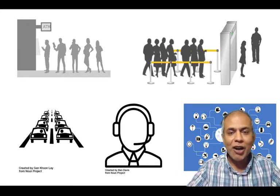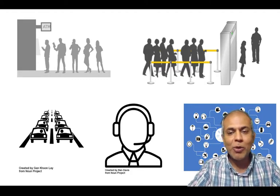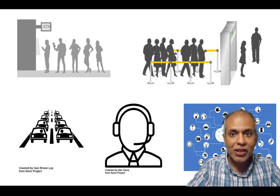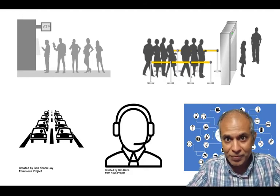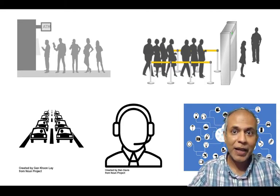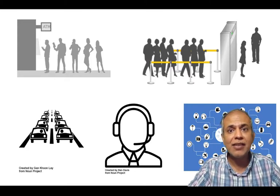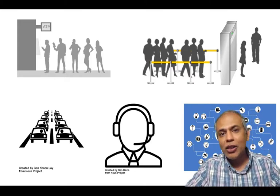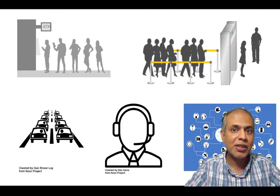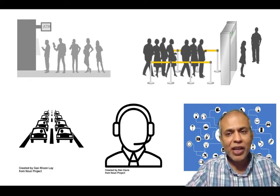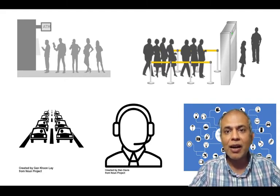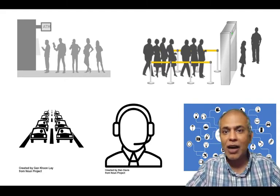Whenever we talk of waiting lines, there are three things which are very important. Number one is that there are customers, or products, or information — something that is waiting. Number two is that they have a queue or a line and they wait; there are many different types of line disciplines, so all these customers, information, or products are waiting as per that discipline in the line. And number three is that there is a server who is providing something that our products need to pass through to get out of the queue.